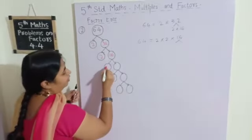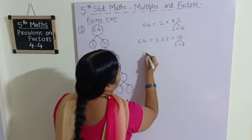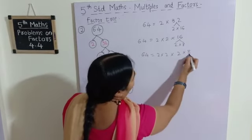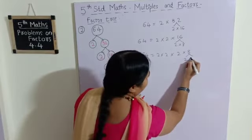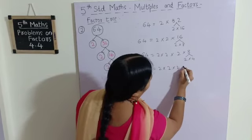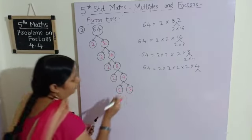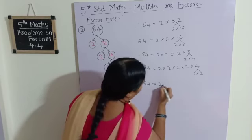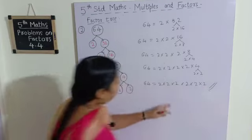We leave the 2s and write 16 as 2 into 8. Now 64 equals 2 into 2 into 2 into 8. Further we can write 8 as 2 into 4. Therefore 64 equals 2 into 2 into 2 into 2 into 4. And 4 can be written as 2 into 2. So 64 equals 2 into 2 into 2 into 2 into 2 into 2, and we have found all the prime factors of 64.